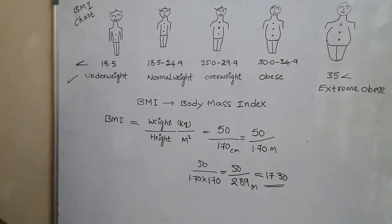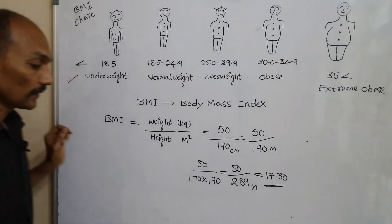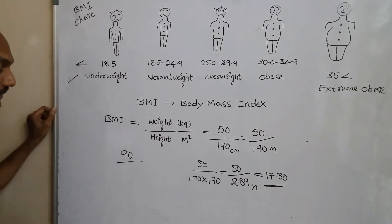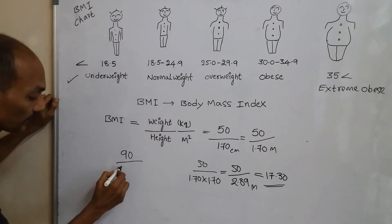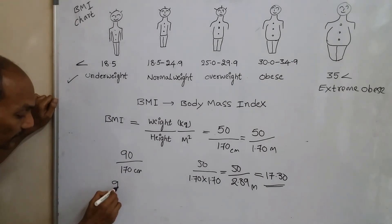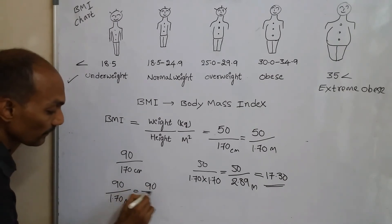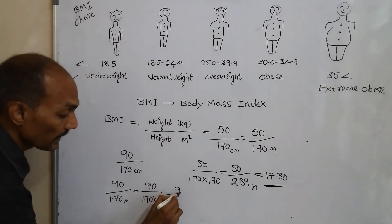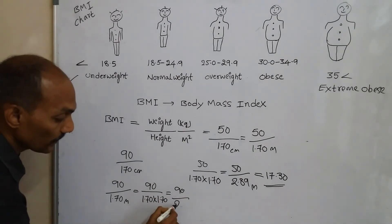Let's see another example. For example, here the person is 90 kilograms in weight and the height is the same - 170 centimeters. So here what we have to do is convert it into meters. Then after it would be 1.70 meters, then 90 divided by 1.70 times 1.70.